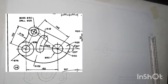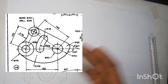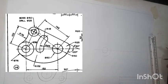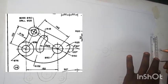We have been given the dimension that the distance between the left-hand side circle and the right-hand side circle is 152mm. Divide by 2 — that would be 76mm. So we will measure 76mm to locate the center of the next circle.